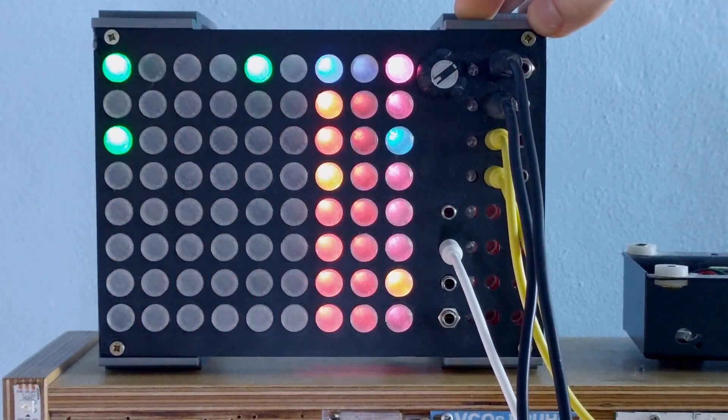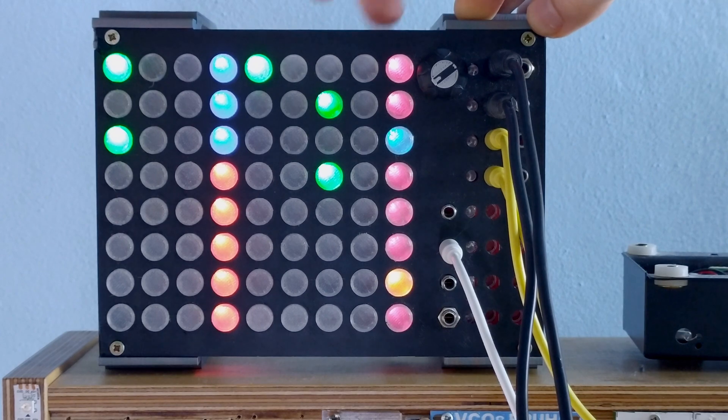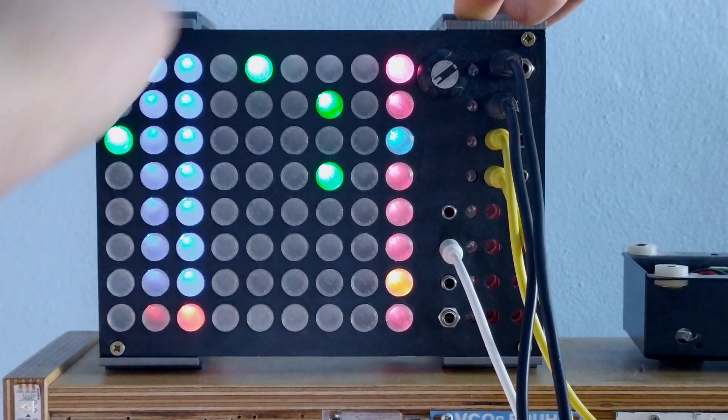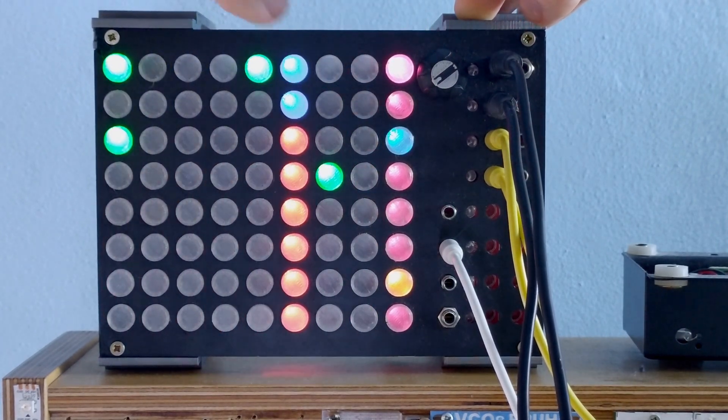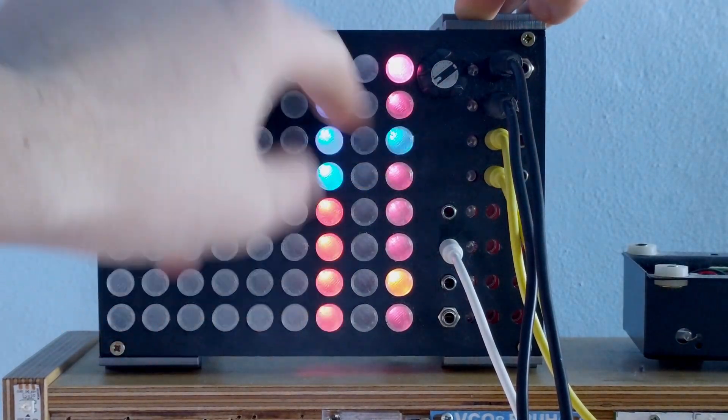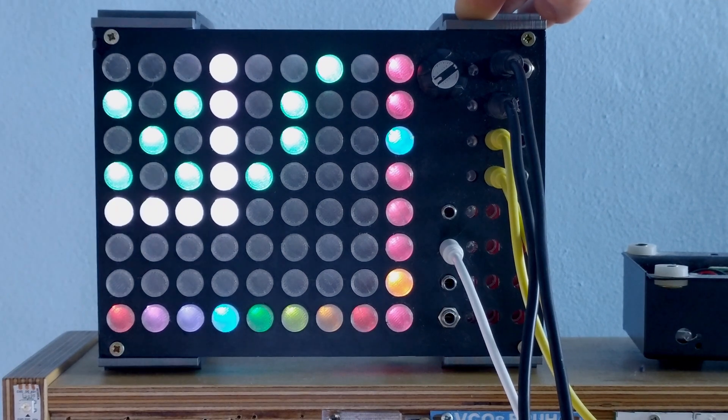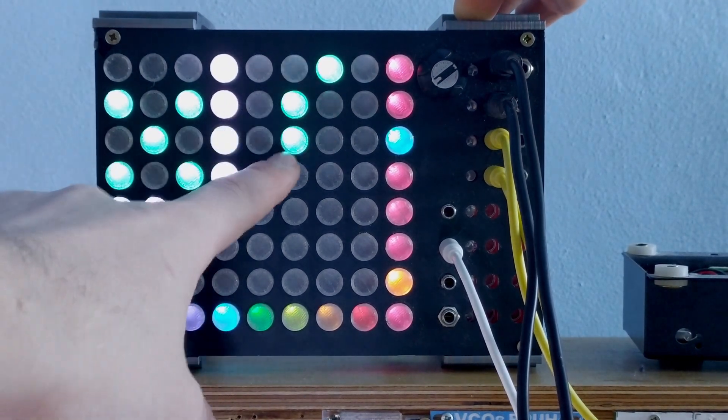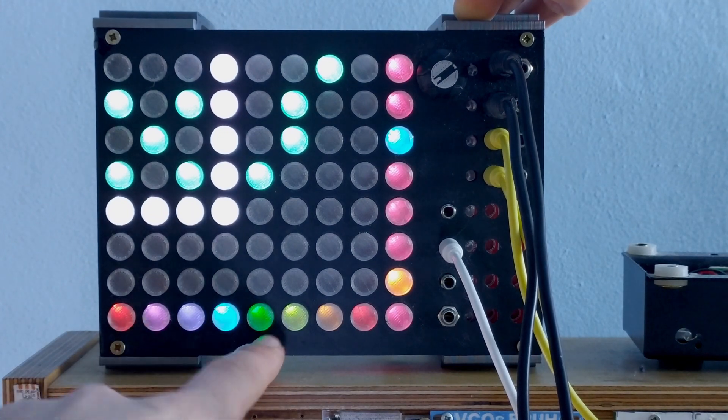And so the top one is the clock source. Either it is generating its own clock or it is receiving clock from somewhere else. So just press it to switch it. The second one I don't think it does anything. No, it doesn't do anything. The third one is a clock division and or clock multiplier.